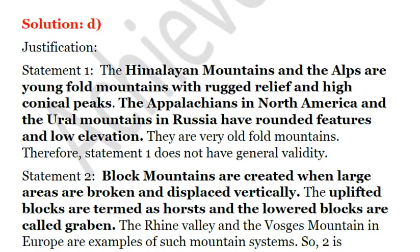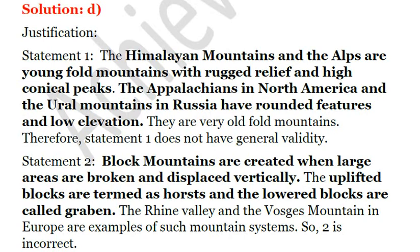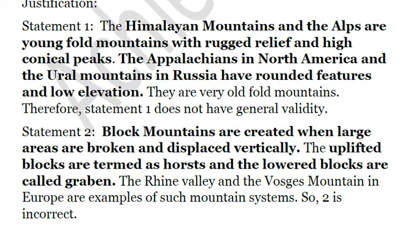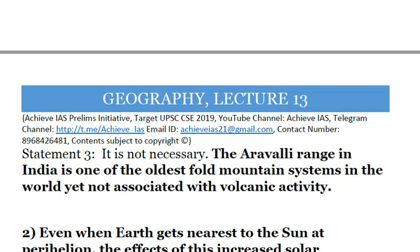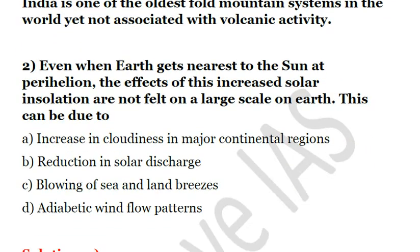The answer is D — all statements are incorrect. Himalayan and Alps mountains are young fold mountains with rugged relief and high conical peaks. The Appalachians in North America and Ural mountains in Russia are old fold mountains with rounded features and low elevation due to considerable erosion. The second statement is about block mountains, which are formed when a plate is displaced vertically and broken — the uplifted blocks are called horst and the lowered blocks are called graben. The third statement is also wrong, as explained by the Aravalli range example.